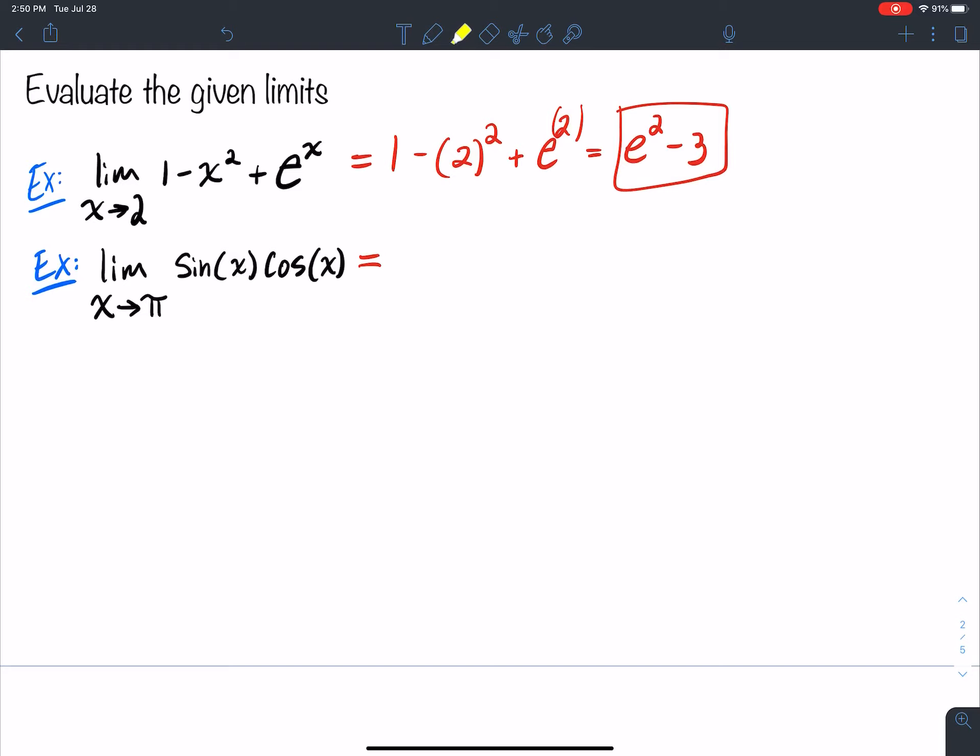Limit as x approaches pi of the function sine x times cosine x. Well, if I literally take the same technique and I just plug in pi everywhere I see an x, what do I get? I get the sine of pi times the cosine of pi. Well, the sine of pi, if we think about the unit circle from your pre-calculus, pi goes over here.